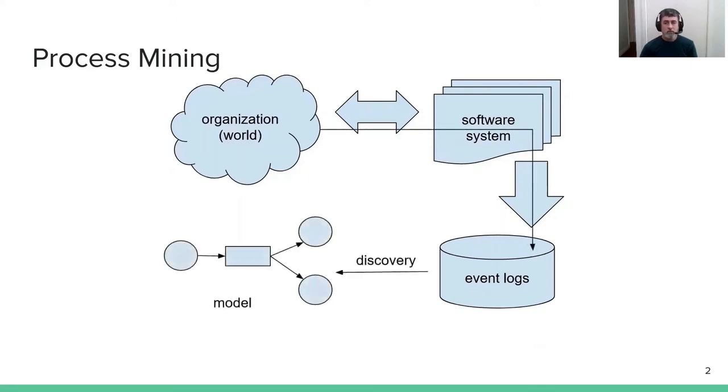We can build formalized models of what the organization does, and Petri nets are one particularly useful structure for these models because they have both a diagrammatic form and a very solid computational and formal meaning. With those process models, we can then look at the organizations and improve them.